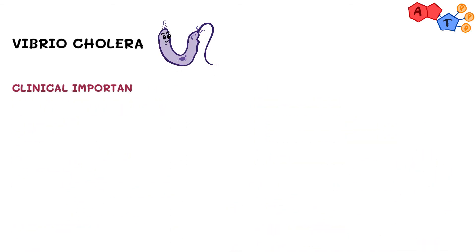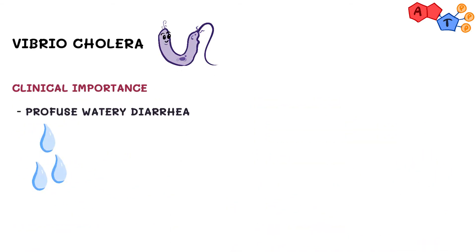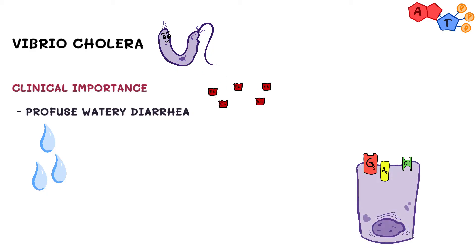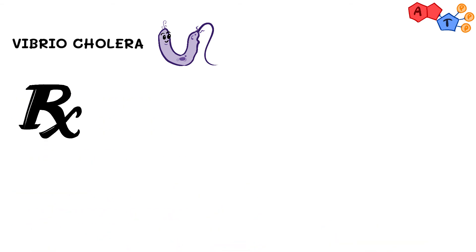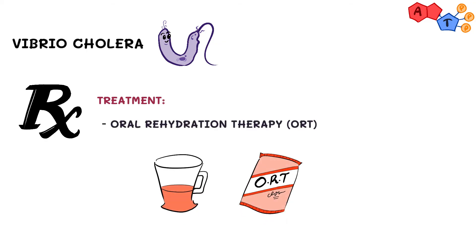Vibrio cholerae causes profuse watery diarrhea by secreting an enterotoxin. The enterotoxin permanently activates Gs, which increases adenylyl cyclase activation, consequently leading to continuous production of cyclic AMP. As a result, there is increased chloride secretion and water follows, leading to diarrhea. For treatment, we use supportive therapy — specifically oral rehydration therapy (ORT).